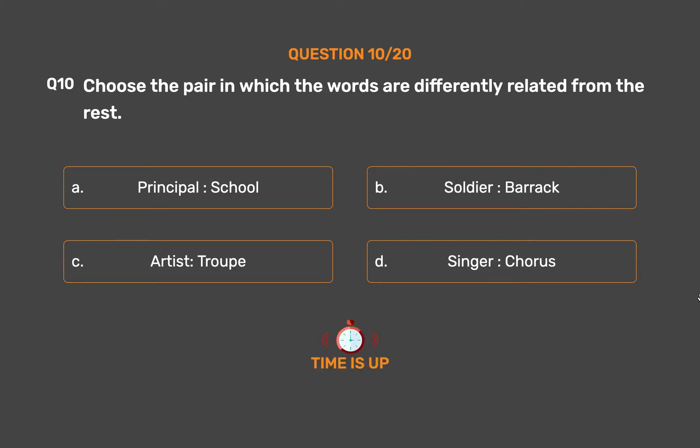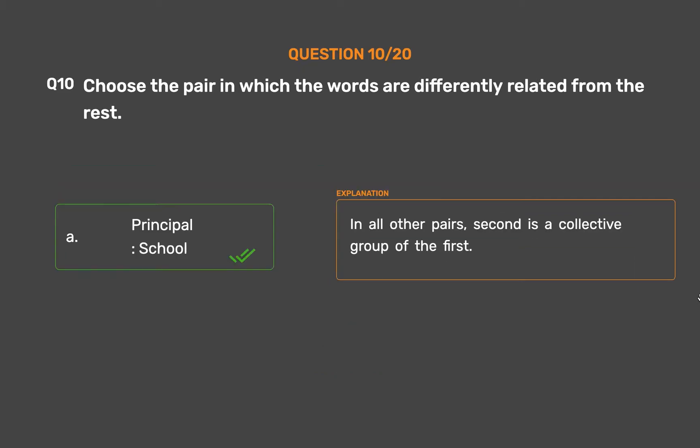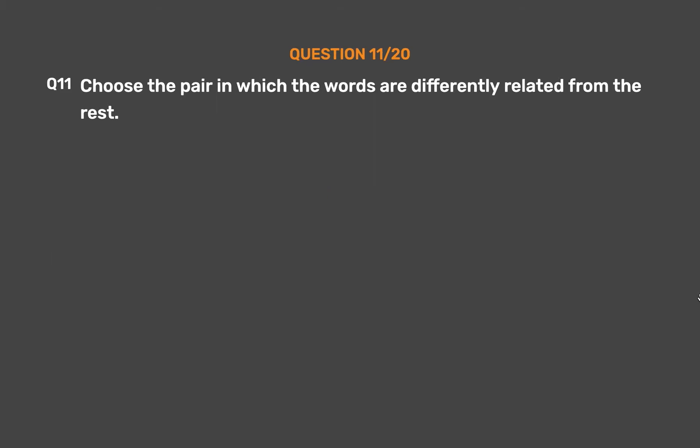The correct answer is Option A: Principal, School. In all other pairs, the second is a collective group of the first.